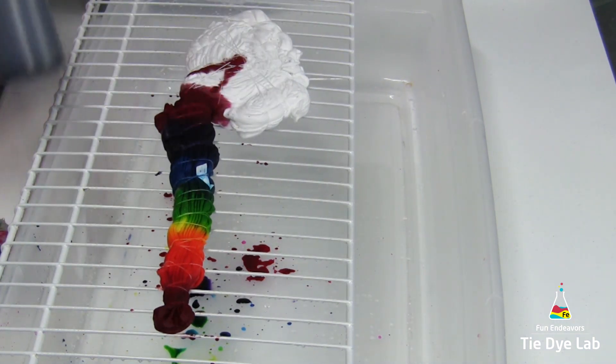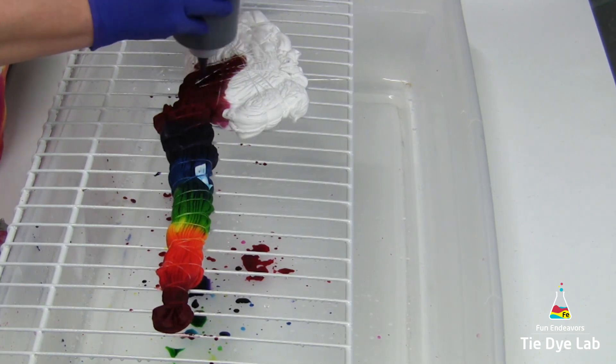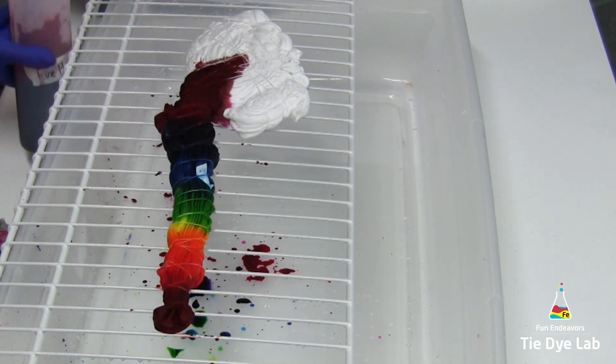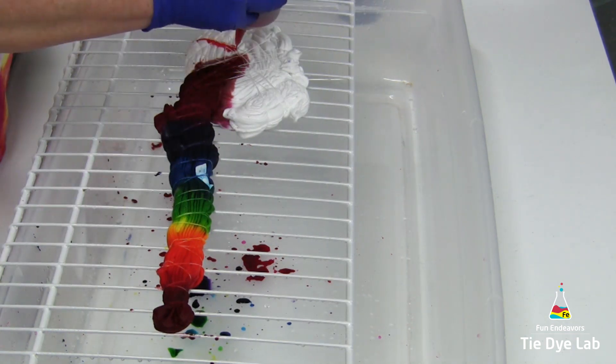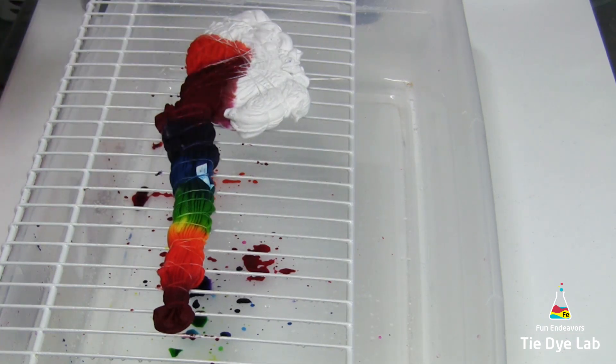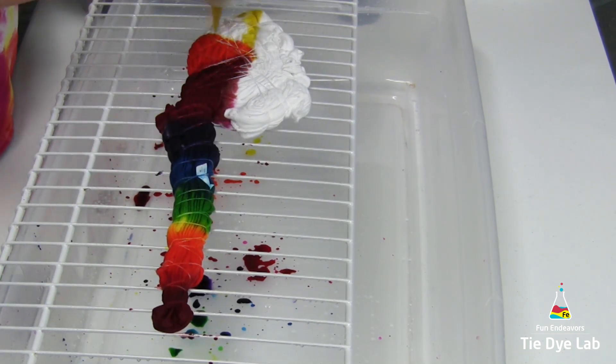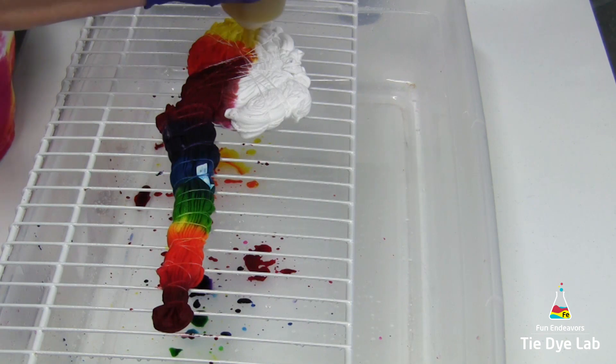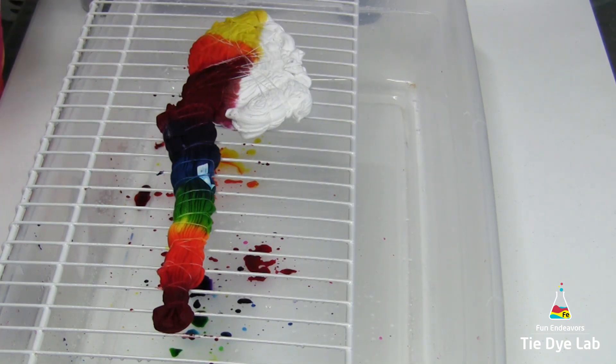Since I ended with the fuchsia, when I begin my spiral, I'm going to start my spiral with a fire red, followed by the deep orange, the lemon yellow, bright green, turquoise, and then this time I'm not going to put the fuchsia on. I'm just going to end with the grape.